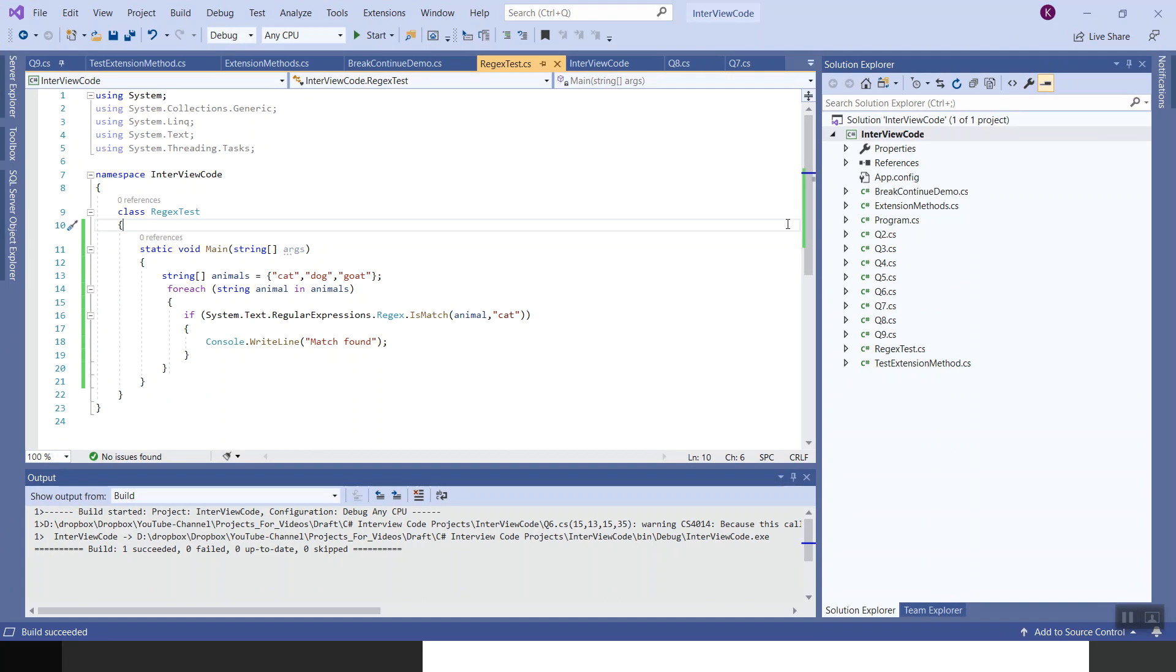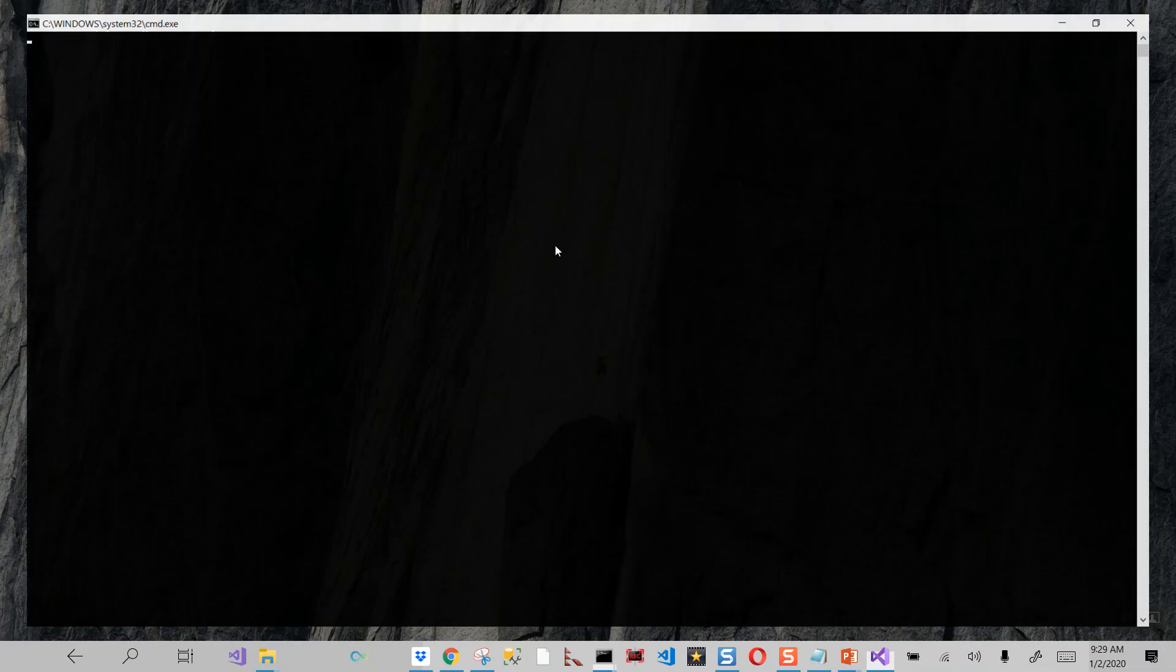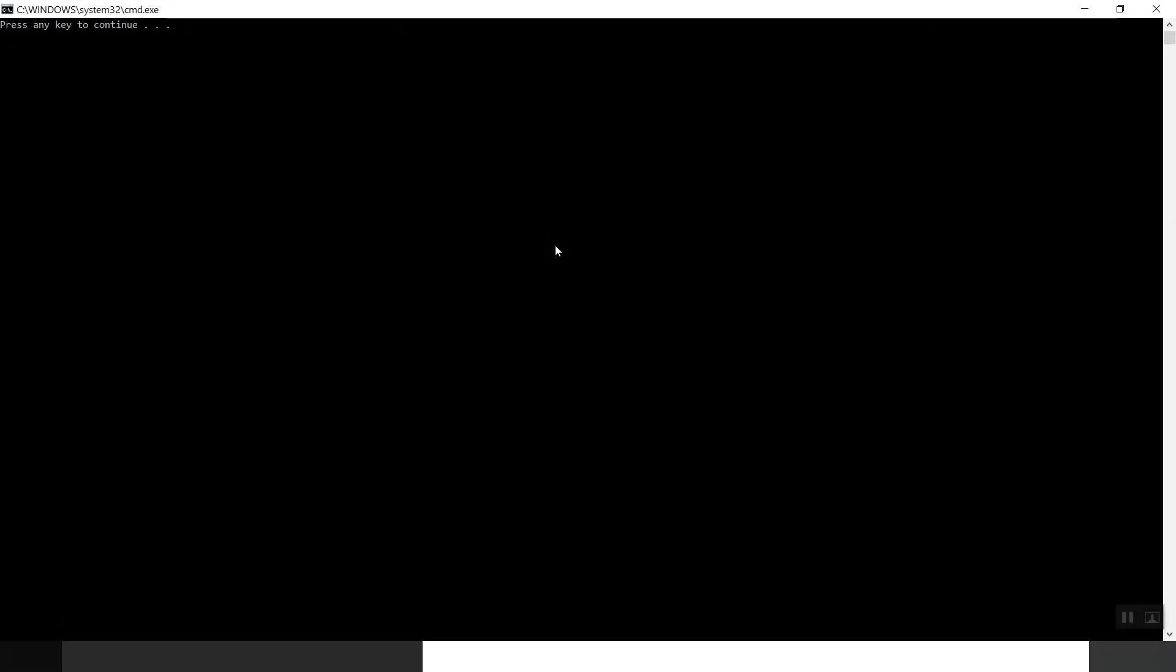Supposing if you write any other animal which is outside this animals array, say cow, let's see what happens. You would expect this to go out of this if loop. It doesn't fall into the if loop and it shouldn't write anything. Let's verify. Control F5 to run this application.